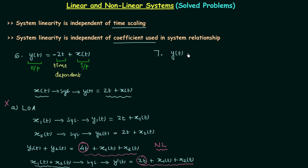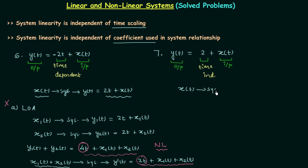In this problem the relationship is: y(t) = 2 + x(t). Here y(t) is the output, x(t) is the input, and the added term is the constant 2, which is time independent. The functionality of the system: comparing input x(t) and output 2 + x(t), the system adds the constant 2 every time to the input.